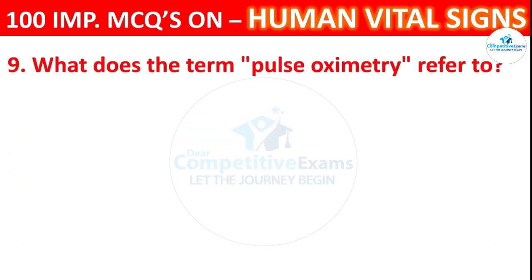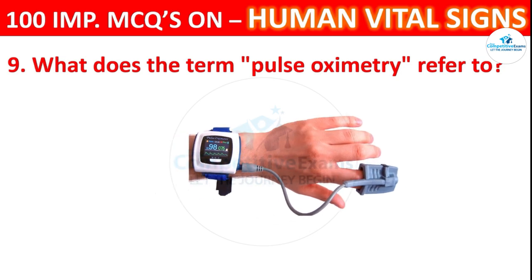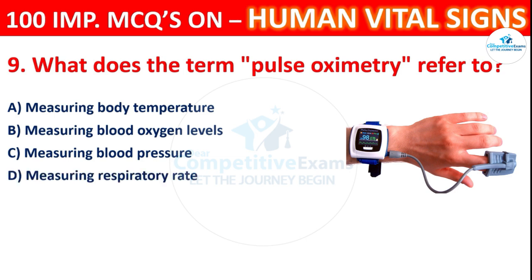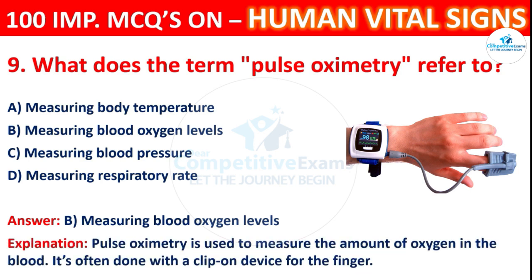Question 9: What does the term pulse oximetry refer to? Options: measuring body temperature, measuring blood oxygen levels, measuring blood pressure, or measuring respiratory rate. The correct answer is B, measuring blood oxygen levels. A pulse oximeter is used to measure the amount of oxygen in the blood. It is often done with a clip-on device for the finger.